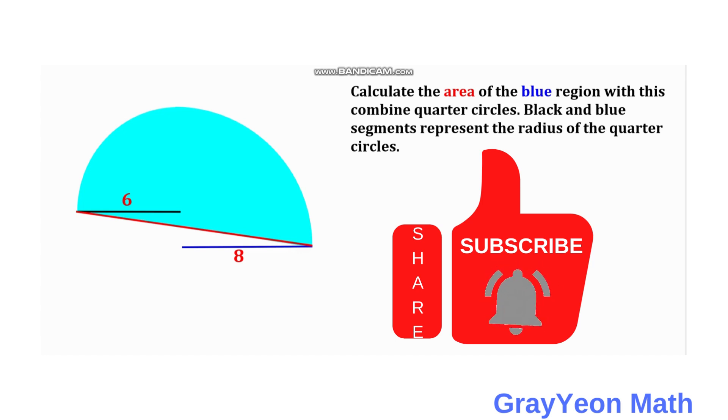The problem states: calculate the area of the blue region with these combined quarter circles. Black and blue segments represent the radius of the quarter circles.